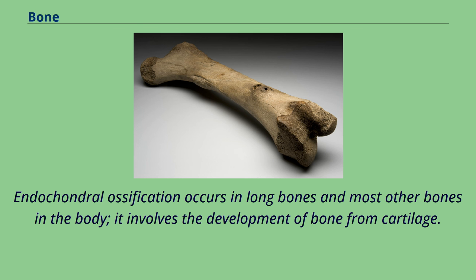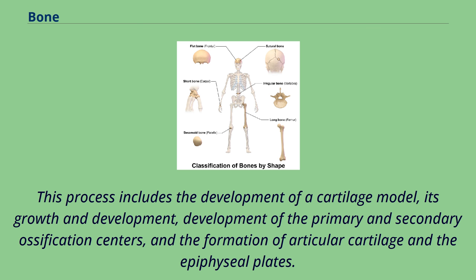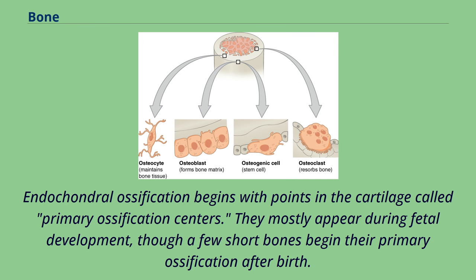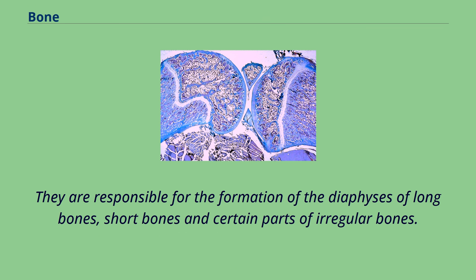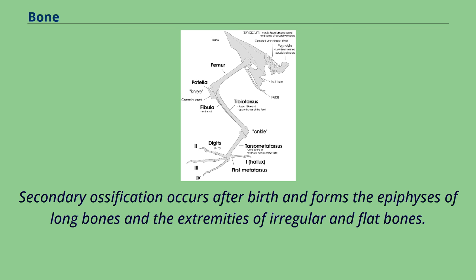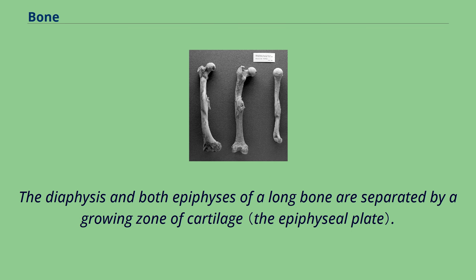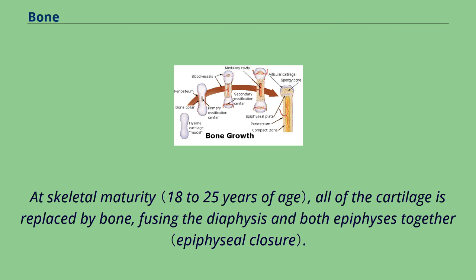Endochondral ossification occurs in long bones and most other bones in the body. It involves the development of bone from cartilage. This process includes the development of a cartilage model, its growth and development, development of the primary and secondary ossification centers, and the formation of articular cartilage and the epiphyseal plates. Endochondral ossification begins with points in the cartilage called primary ossification centers, which mostly appear during fetal development. They are responsible for the formation of the diaphysis of long bones, short bones, and certain parts of irregular bones. Secondary ossification occurs after birth and forms the epiphysis of long bones. At skeletal maturity, all of the cartilage is replaced by bone, fusing the diaphysis and both epiphyses together.